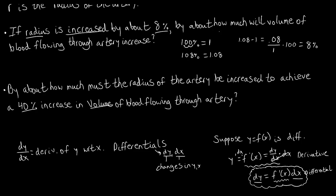We need to keep this strategy in mind because the answers require percent notation. The same applies to the second question: going from 100% to 140% volume gives 1.4 minus 1 over 1 times 100, which is 0.4 times 100, equaling the 40% from the prompt.